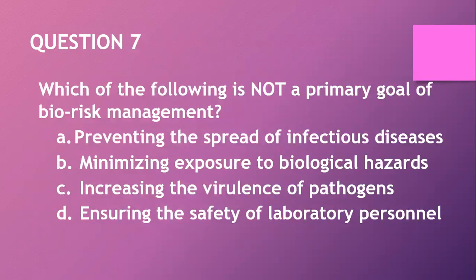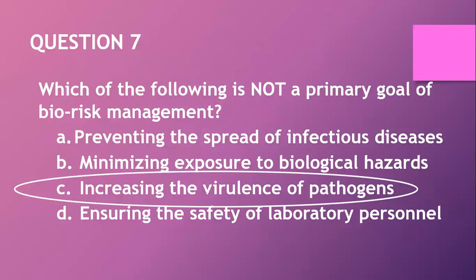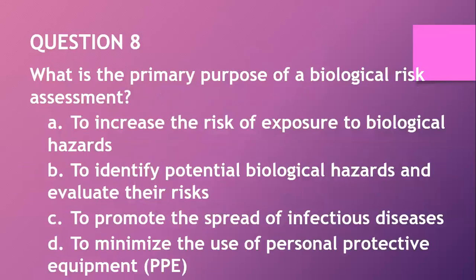Question seven — note: when they ask a question, note whether it is a positive or negative question. Which of the following is NOT a primary goal of virus management? A. Preventing the spread of infectious diseases. B. Minimizing exposure to biological hazards. C. Increasing the virulence of pathogens. D. Ensuring the safety of laboratory personnel. The answer is C — we don't want to increase virulence.